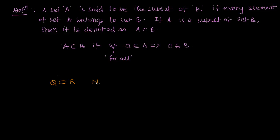Is the set of natural numbers a subset of rational numbers? Yes. A rational number is expressed as P/Q where P and Q are integers. A natural number like 1 can be expressed as 1/1, and 2 as 2/1 or 4/2, so natural numbers are indeed rational numbers. Is natural number a subset of integers? Yes, integers go from negative infinity to positive infinity and include all natural numbers.